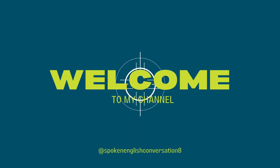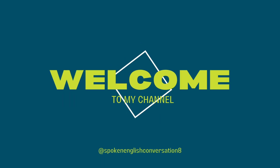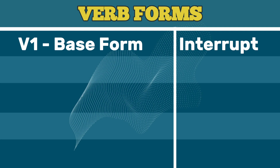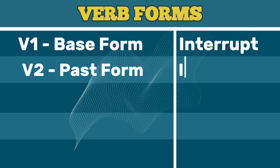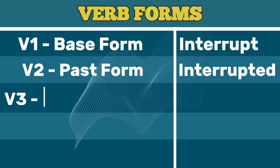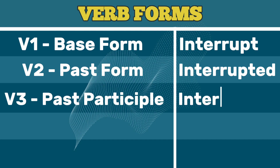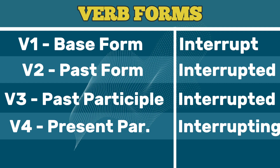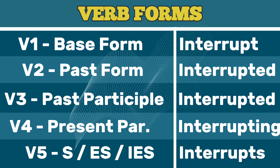Spoken English Conversations — subscribe please. V1 Base Form: Interrupt. V2 Past Form: Interrupted. V3 Past Participle: Interrupted. V4 Present Participle: Interrupting. V5 Third Person Singular: Interrupts.